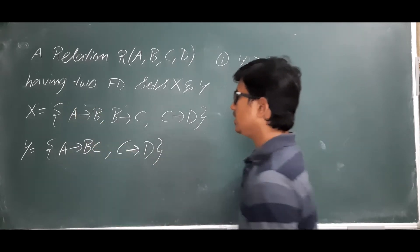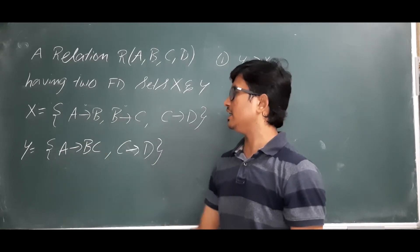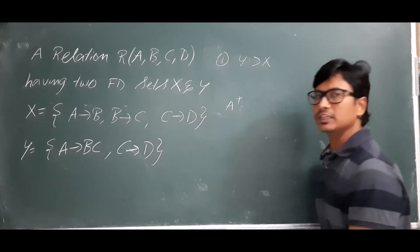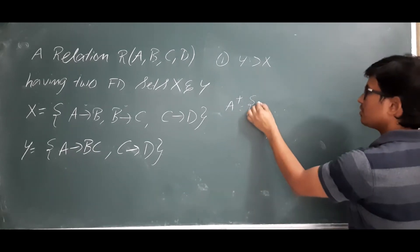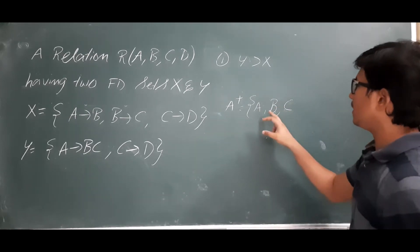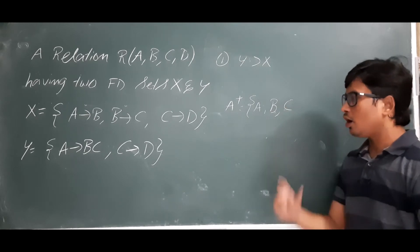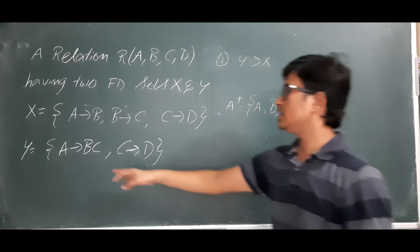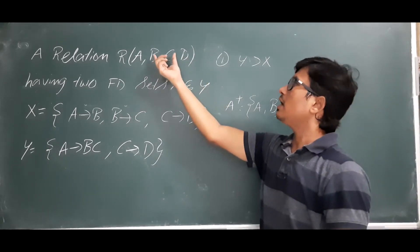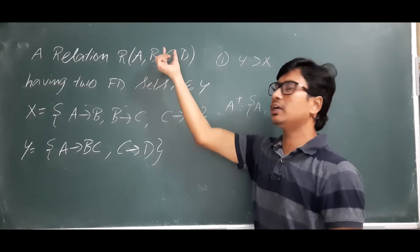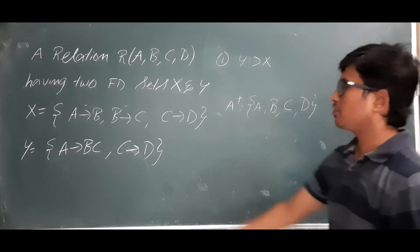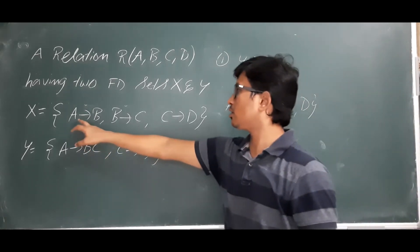A→B: we check if it is present in Y. It is not directly present, so we check indirectly by calculating A+ from the FDs present in Y. A+ consists of a, and since a determines bc, we get b and c. Then c determines d, so A+ = {a, b, c, d}. A+ contains b, so A→B is indirectly present in Y. Note: write b, c as separate attributes, not as 'bc'.